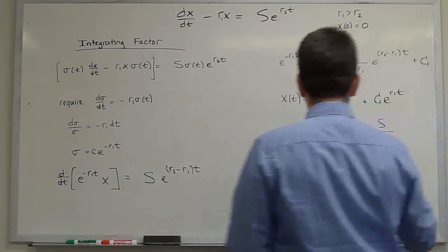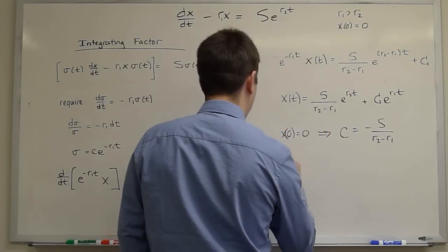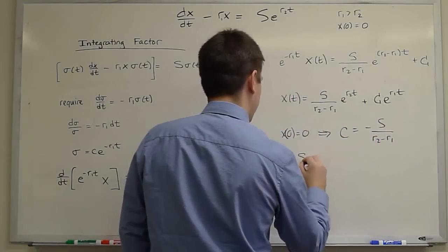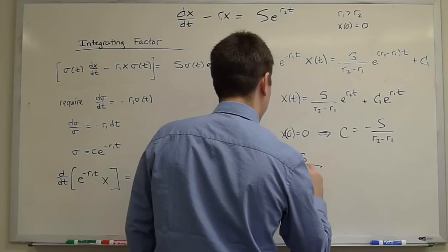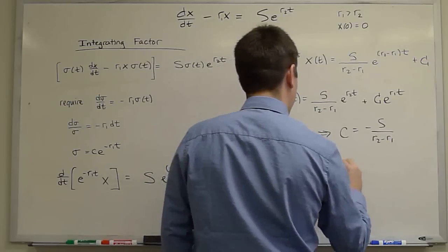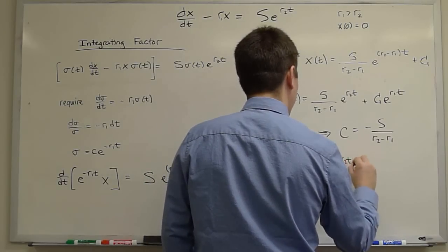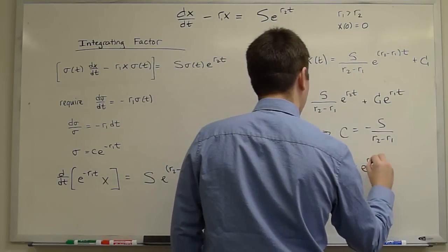Therefore, x of t is s over r2 minus r1 times e to the r2 t minus e to the r1 t.